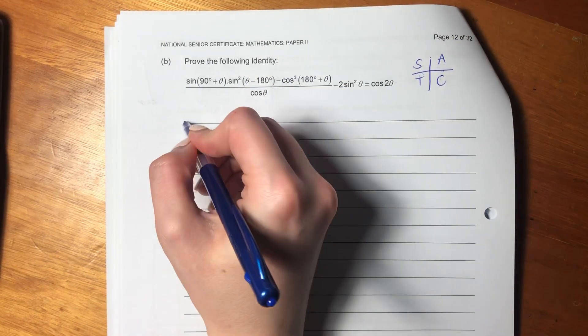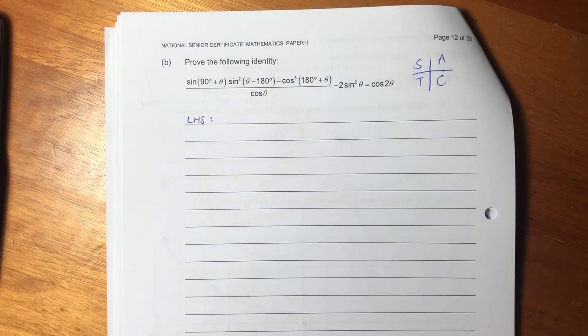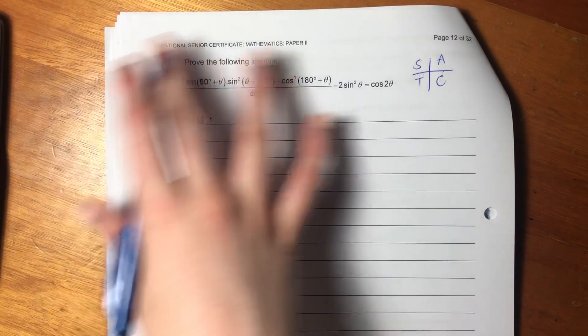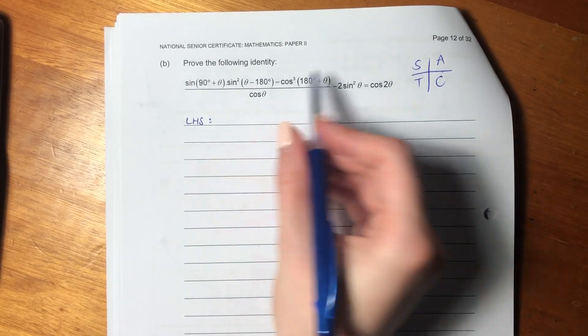So I'm going to start here on the left-hand side. Generally start on the side that has the most to work with. It's difficult to start with cos 2θ. Because it's like, well, what do we actually do? There's only minimal things we can do. Whereas this side, there's plenty we can do. So let's see what we can do.